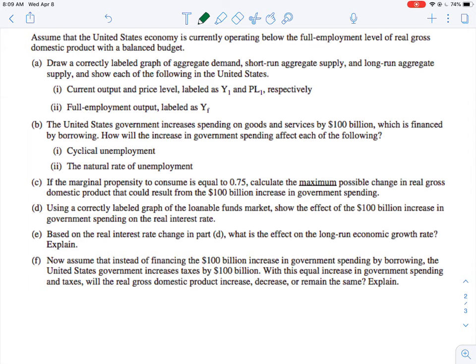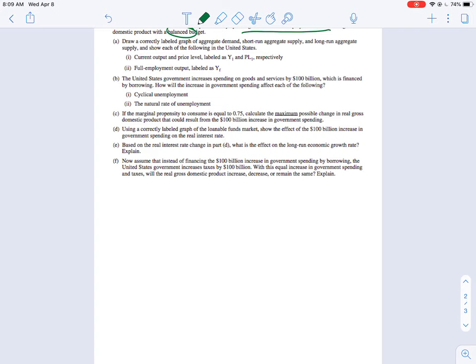So like I said, this one's a little bit more review. All right, so we're currently operating below the full employment level of GDP, and we have a balanced budget. So a correct label graph of where we are. So this one's going to be a little bit harder. I'll kind of shrink us down so we can see a little bit better. So we've got PL and real GDP.